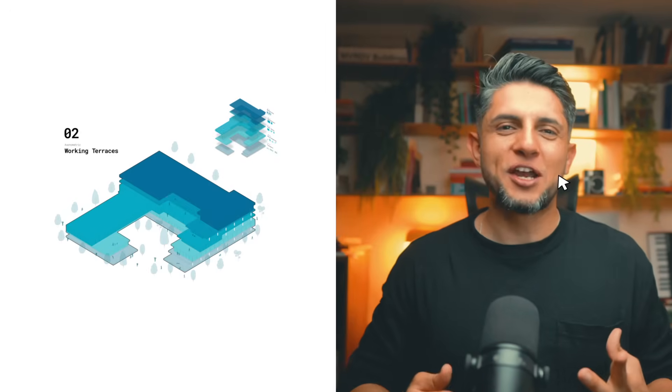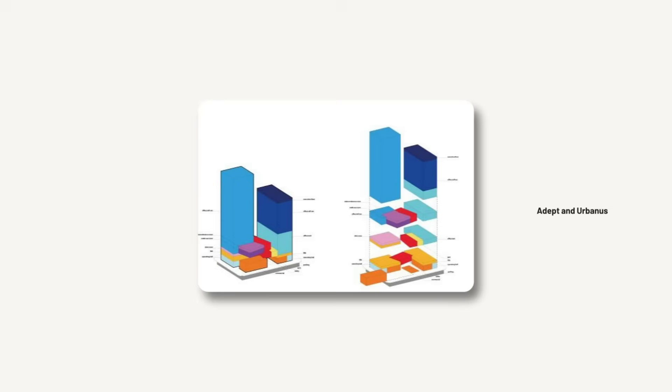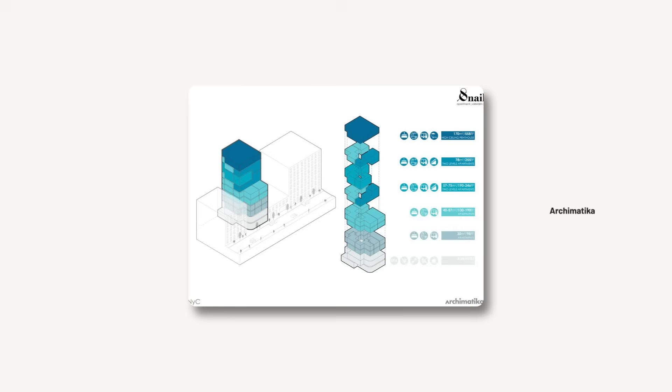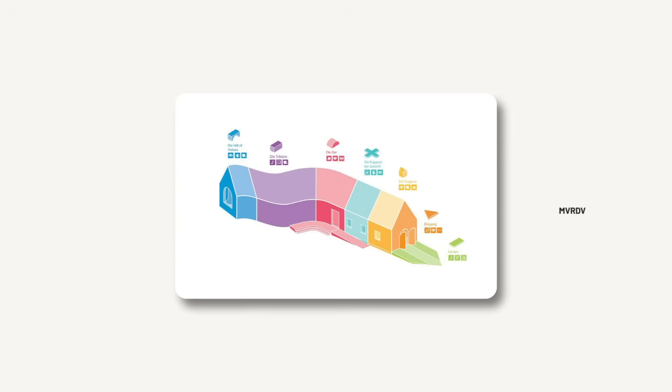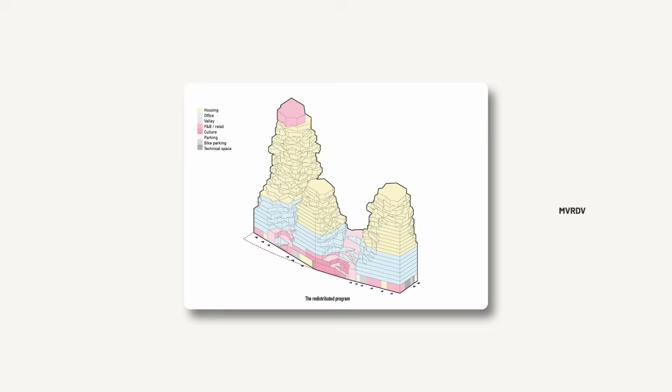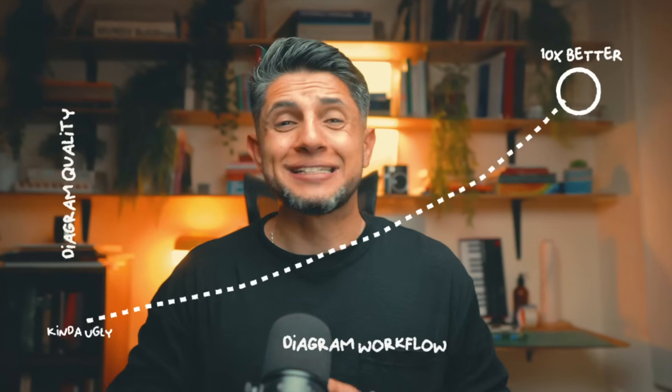In this tutorial I want to show you how I achieved these two different styles of program diagrams using Adobe Illustrator and a little bit of Photoshop. Have you ever wondered how these amazing program diagrams are created? They seem so easy and straightforward to make, but when it's your turn it ends up not looking beautiful at all. My program diagrams didn't start to look ten times better before I applied this workflow.